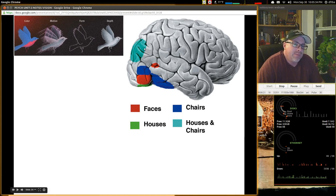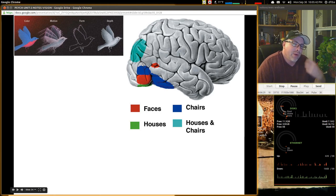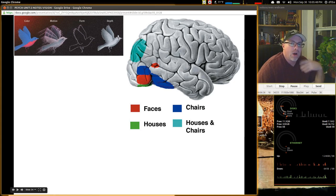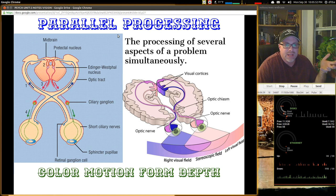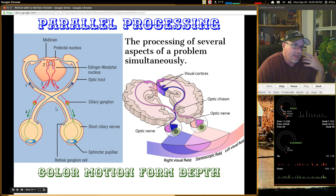But here's how your brain does it. Houses and chairs, faces. You get a sense, houses down here. You get a sense for where the brain's going to light up and how it's going to look at these different things. But we're able to do color, motion, form, and depth all at the same time. And this simultaneous processing of several aspects of a problem is what parallel processing is all about. And you get a good look at it here and how it works.